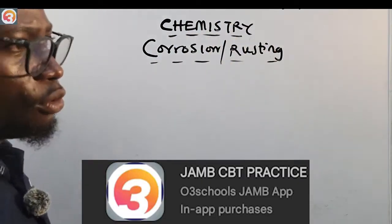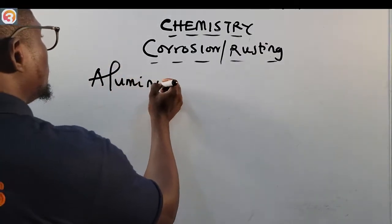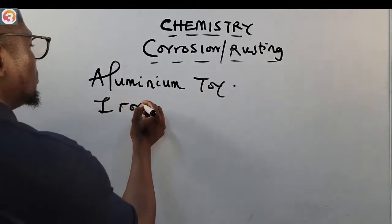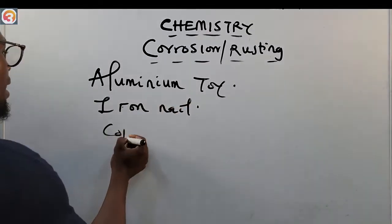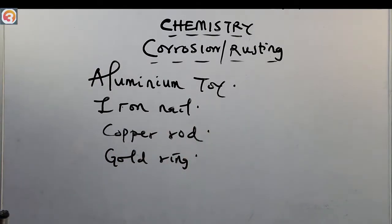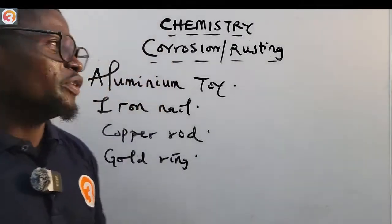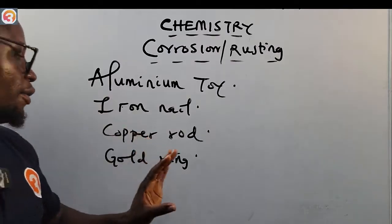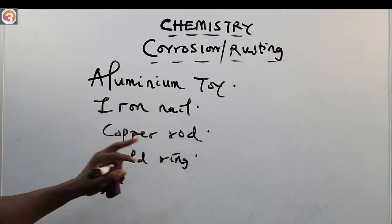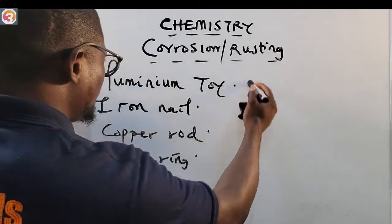Now let's go to corrosion and rusting. Let's say we have four materials: an aluminum toy, an iron nail, a copper rod, and a gold ring. Which of these materials do you think will corrode faster? If you say the iron nail will corrode faster, you are right. If you say the gold ring will corrode the least, you would also be correct.